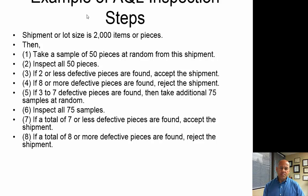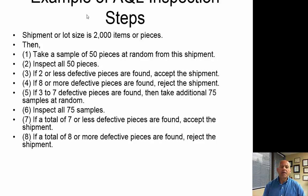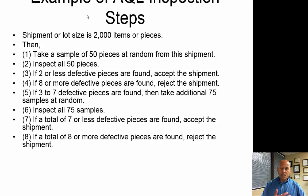As an example of an AQL inspection: let's say we have a lot of 2,000 items. It is very common to take 50 pieces for inspection, drawn from throughout the shipment—front, back, middle, and sides. If 2 or fewer are defective, the entire shipment is accepted. If 8 or more are defective, the entire shipment is rejected. If 3 to 7 defective pieces are found, they may take an additional 75 pieces through random sampling and repeat the process. So with AQL inspection, it is always based on statistical sampling of an entire shipment.